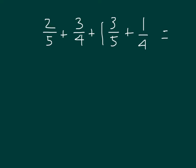Here I have a problem: 2 fifths plus 3 fourths plus 1 and 3 fifths plus 1 fourth. I notice this is an addition problem involving fifths and fourths. We need to think about like units in order to add or subtract. In this case, we group and think about those like units.